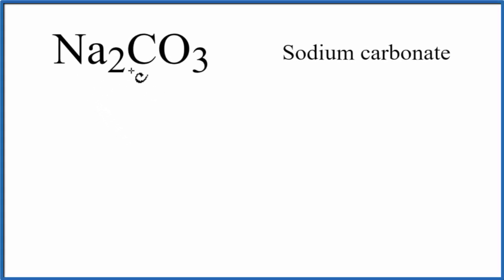To write the Lewis structure for Na2CO3, sodium carbonate, we first need to recognize that Na is a metal, and CO3 is a group of nonmetals. It's a polyatomic ion called the carbonate ion.